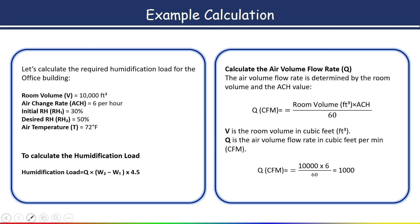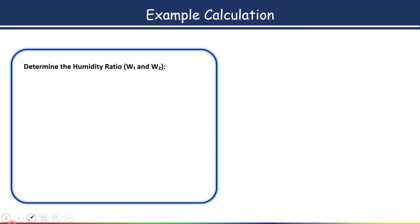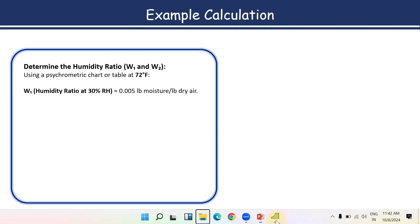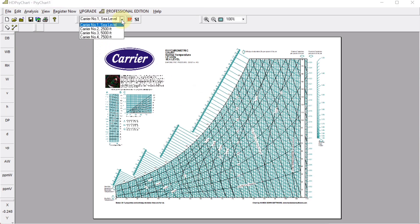The air volume flow rate is 1,000 cubic feet per minute. Next, we need to calculate the humidity ratio values. The supply air temperature is 72°F and the initial relative humidity is 30 percent. Using psychrometric software, you get the initial humidity ratio W1 = 0.005 pound of moisture per pound of dry air. To use the software, open it, select the appropriate sea level option based on your location — for example using ASHRAE handbook climatic data.